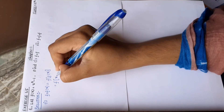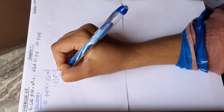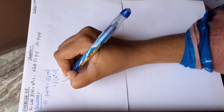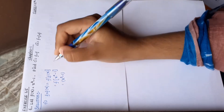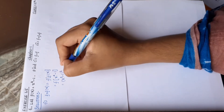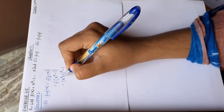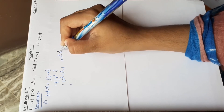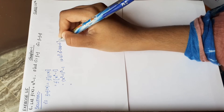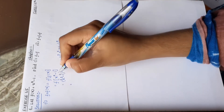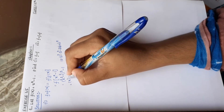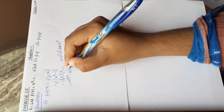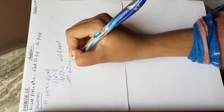This is f of f of x, which is nothing but a minus b the whole square. So a minus b the whole square is equal to a squared minus 2ab plus b squared. Here a is f of x and b is equal to 1.